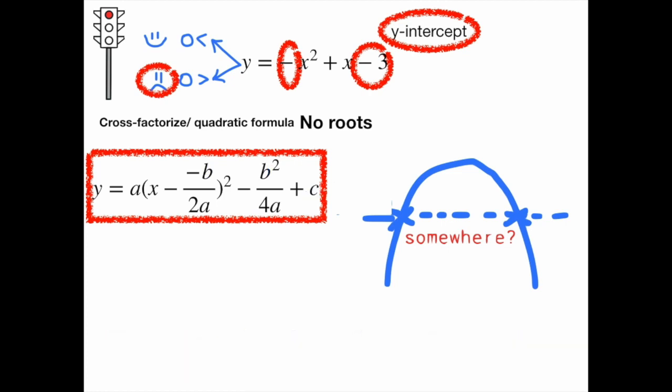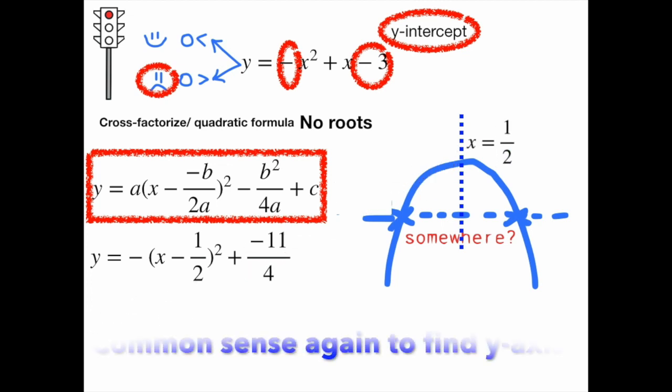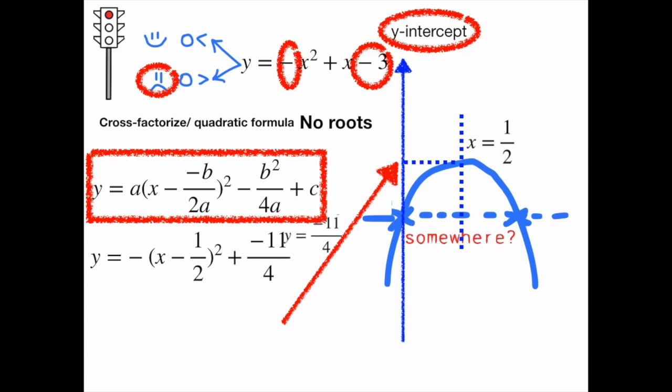Alternatively, you can attempt the complete the square method if formulas are not your thing. This might take a while, but if everything goes right, you should be able to read off a line of symmetry value of half. Knowing where X equals half is will help you pin down the Y axis on its left. What's left now is reading off the maximum Y value of negative 11 over 4.